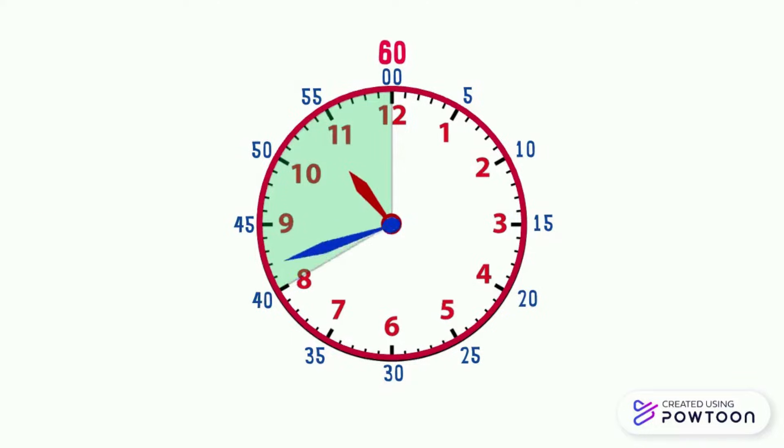When the large minute hand moves 20 minutes, it will be back up at the number 12, and the small hour hand will be at the number 11. So 10:40 is also 20 minutes to 11, which means it still needs 20 minutes to be 11 o'clock.